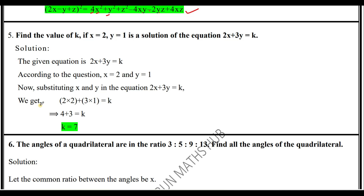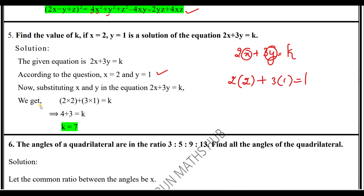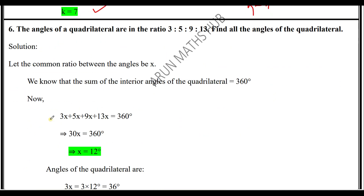Fifth question: find the value of k if x equals 2 and y equals 1 is a solution of the equation 2x + 3y = k. Since x equals 2 and y equals 1 is a solution, substitute these values: 2·2 + 3·1 = k, which gives 4 + 3 = k. Therefore k equals 7, because it satisfies the equation and LHS equals RHS.